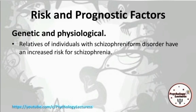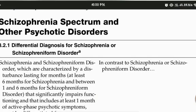The first consideration is risk and prognostic factors. Relatives of individuals with Schizophreniform Disorder have an increased risk of Schizophrenia. If you consider relatives with Schizophrenia, the risk for Schizophrenia is even higher than this.